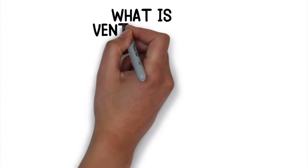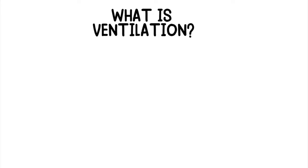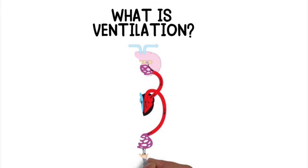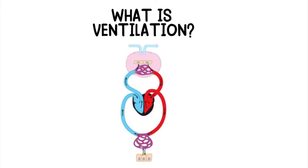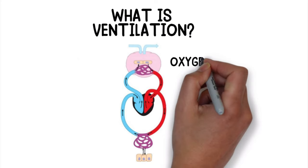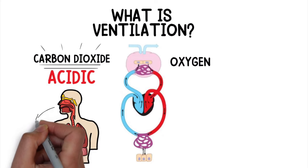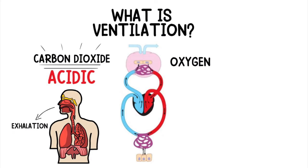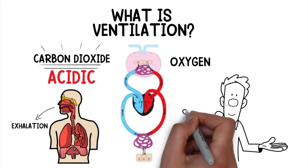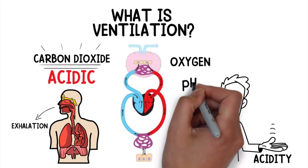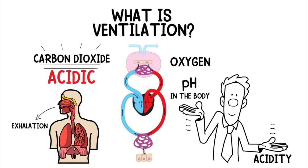First and foremost, what is ventilation? Ventilation is a term that refers to the molecular exchange of gases in the body. It looks at both oxygen and carbon dioxide, but the primary parameter to assess for ventilation is carbon dioxide. Carbon dioxide in the body is considered to be acidic. Therefore, it is transported to the lungs, where it can be removed by exhalation. This natural phenomenon keeps the acidity to a minimum and the pH in the body within the normal range.